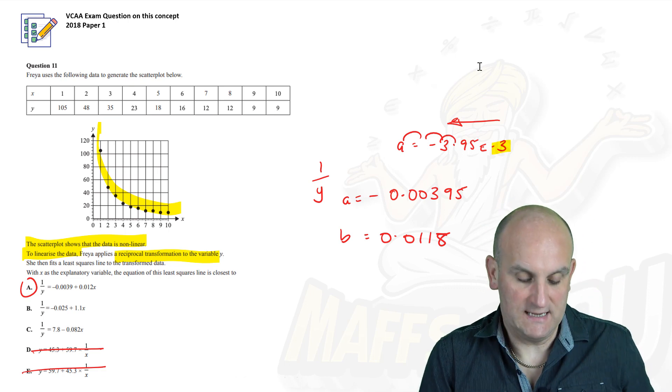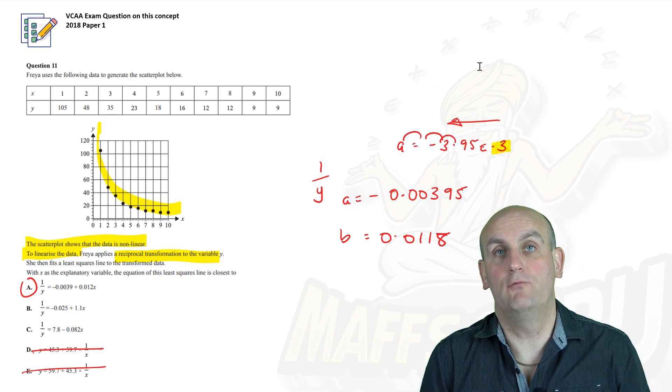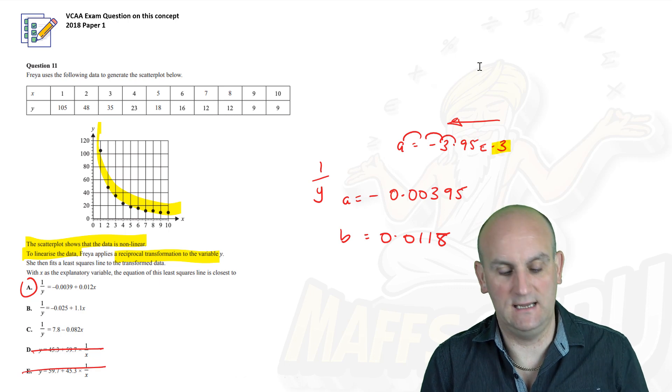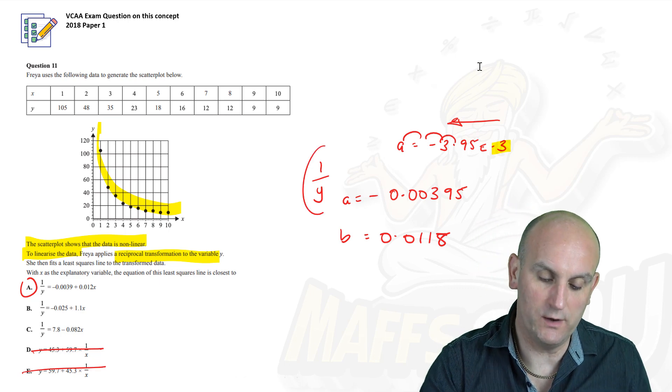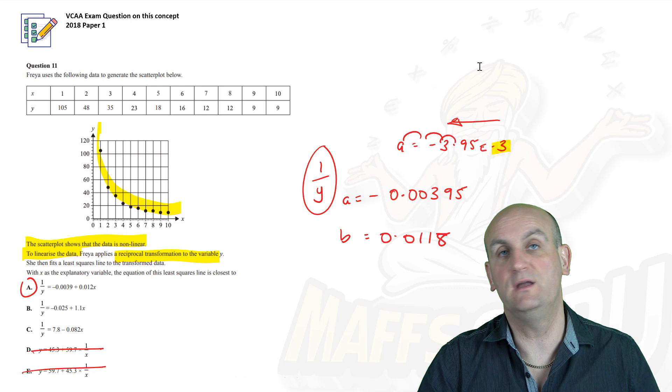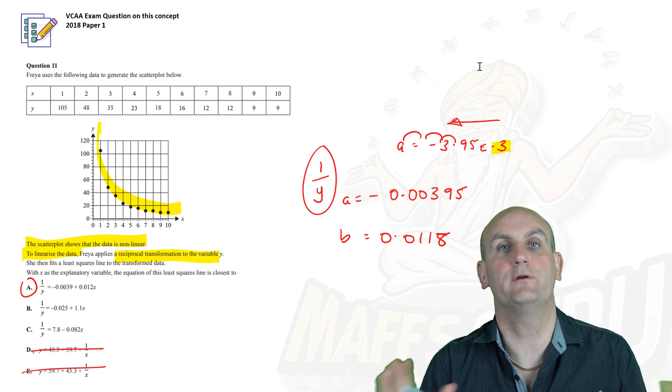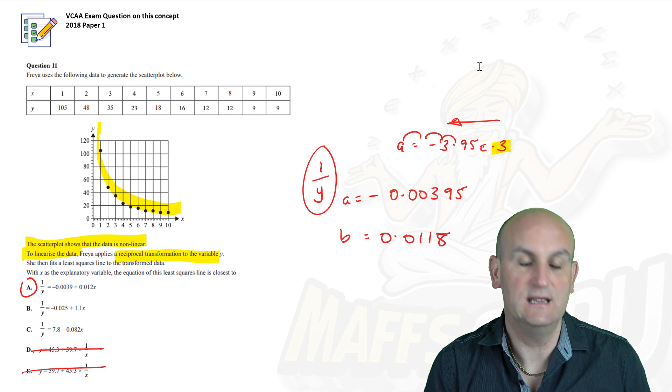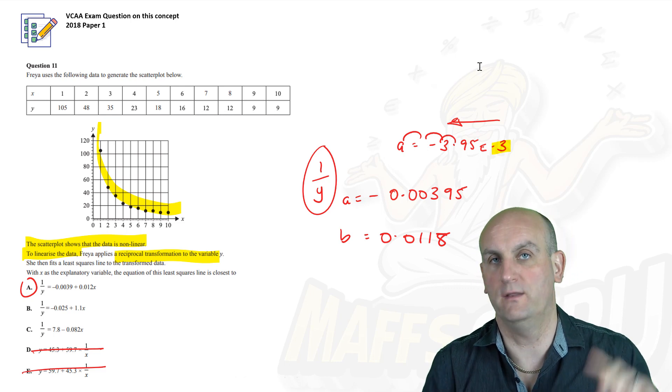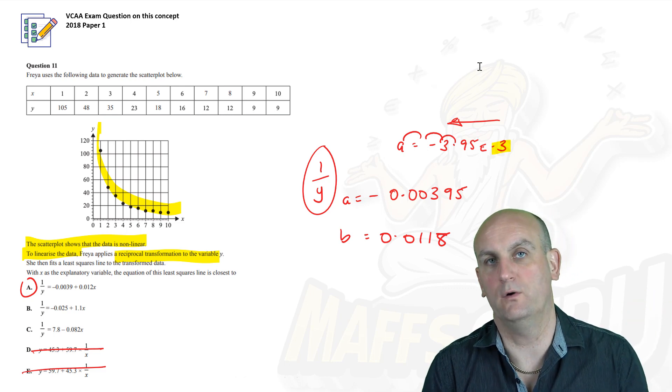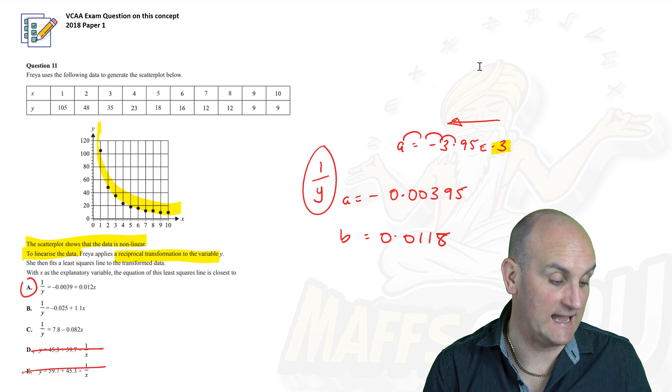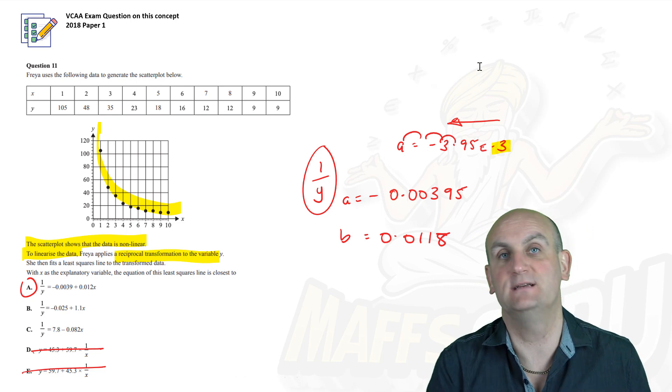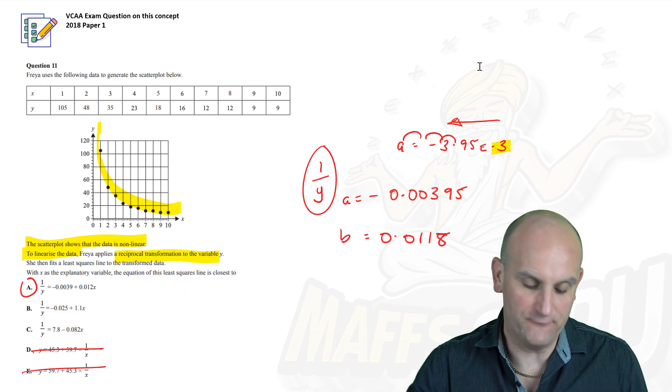You're probably wondering where B and C come from. How can they be so wrong? Well, interestingly, remember it told you to do a 1 on Y transform. I will give you any money you like. One of those answers is for a 1 on X. And I would imagine another one that they've got the X and the Y values the one way round. All of these mistakes can and do take place in math. So just please be very, very careful.